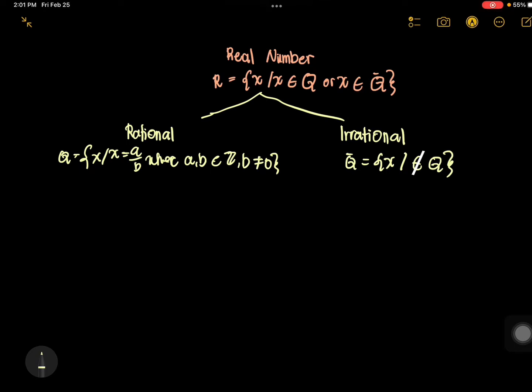Rational numbers are those numbers that are terminating and non-terminating decimals. A rational number can always be expressed as a fraction. When a number can be expressed as a fraction, it is rational. If it cannot be expressed as a fraction, it is irrational. That is the difference.